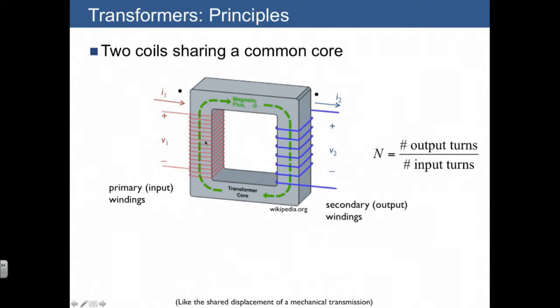One side is called the primary or input winding, and the other is the secondary or output winding.